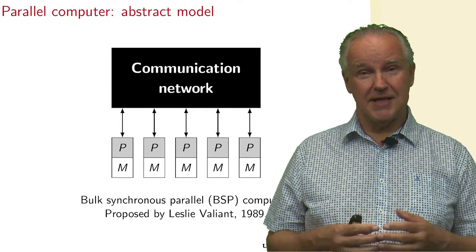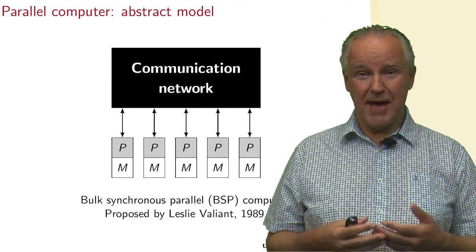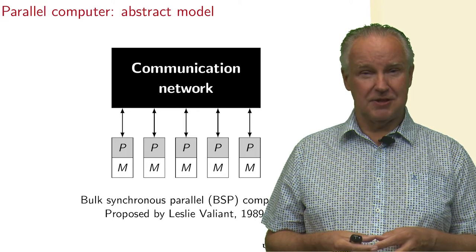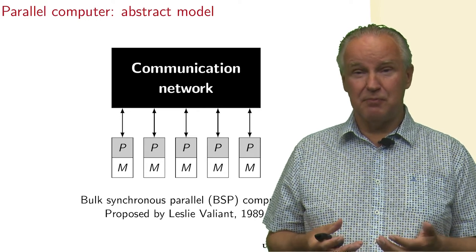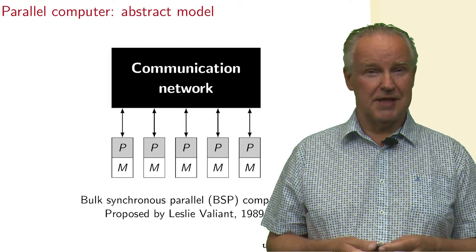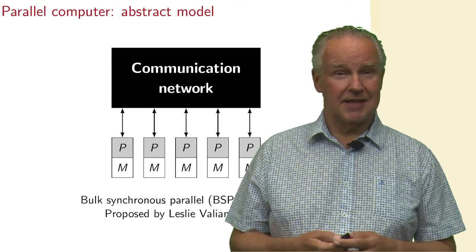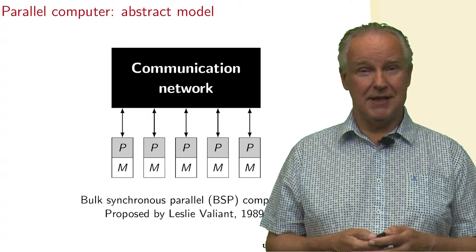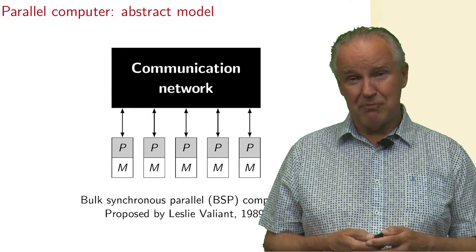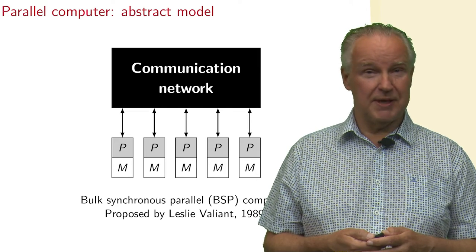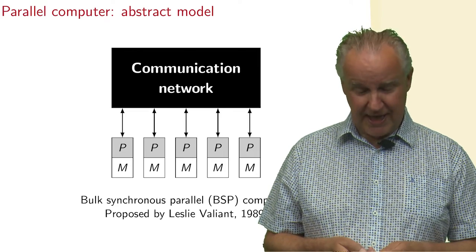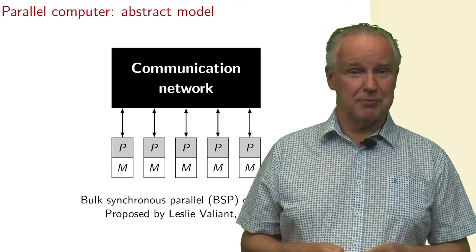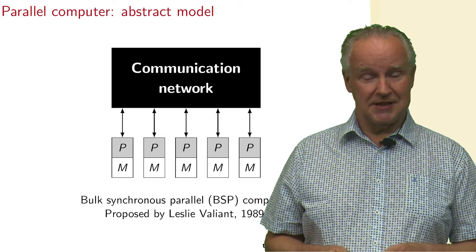In this model we have an abstract model of the parallel computer. And that's the bulk synchronous parallel computer, the BSP computer, which you see. And it consists of a set of processors, the P of processor, with memories, the M of the memory. And they are all connected by a communication network. And this is a model that was proposed by Leslie Valiant in 1989.